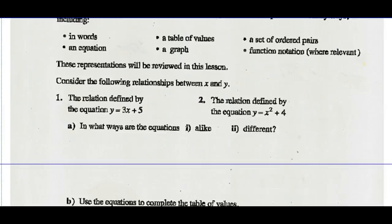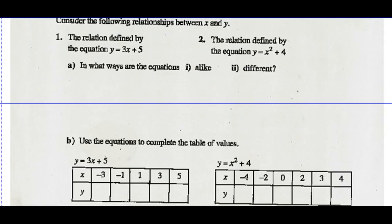So let's consider the relationship between X and Y. Let's say a relation is defined by the equation Y equals 3X plus 5, and in part 2, the relation is defined by the equation Y equals X squared plus 4. Part A asks: in what ways are the equations alike and different?